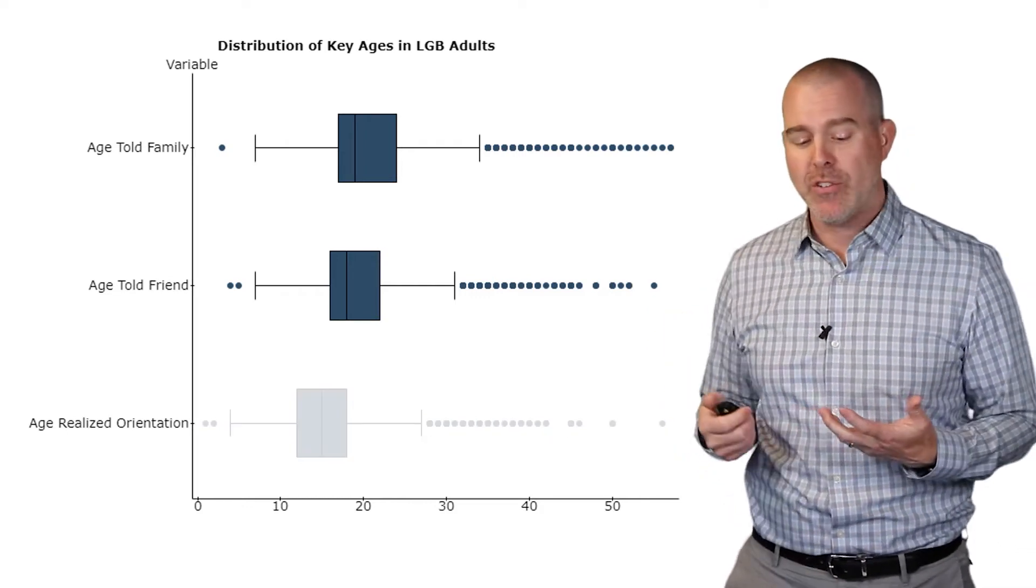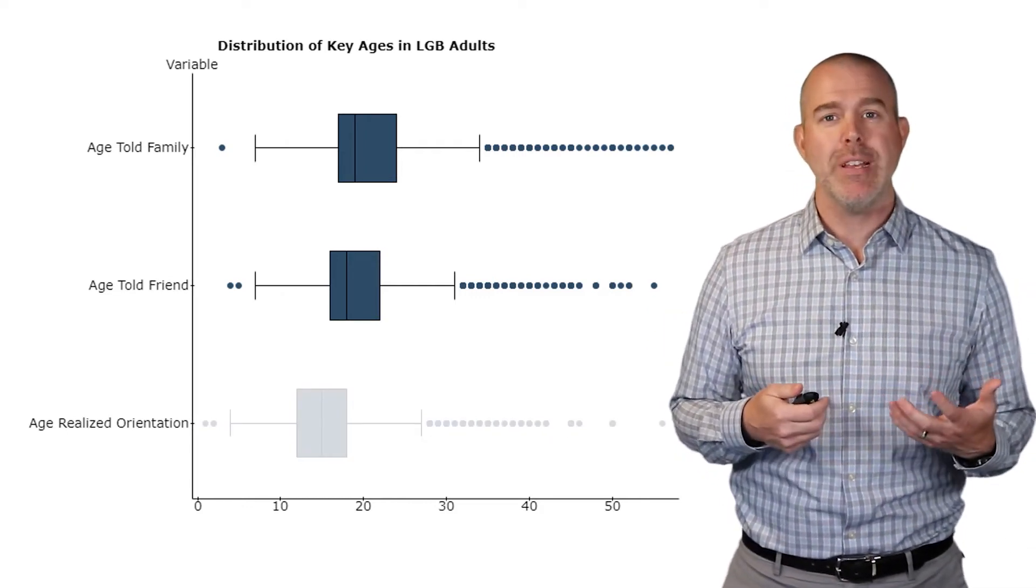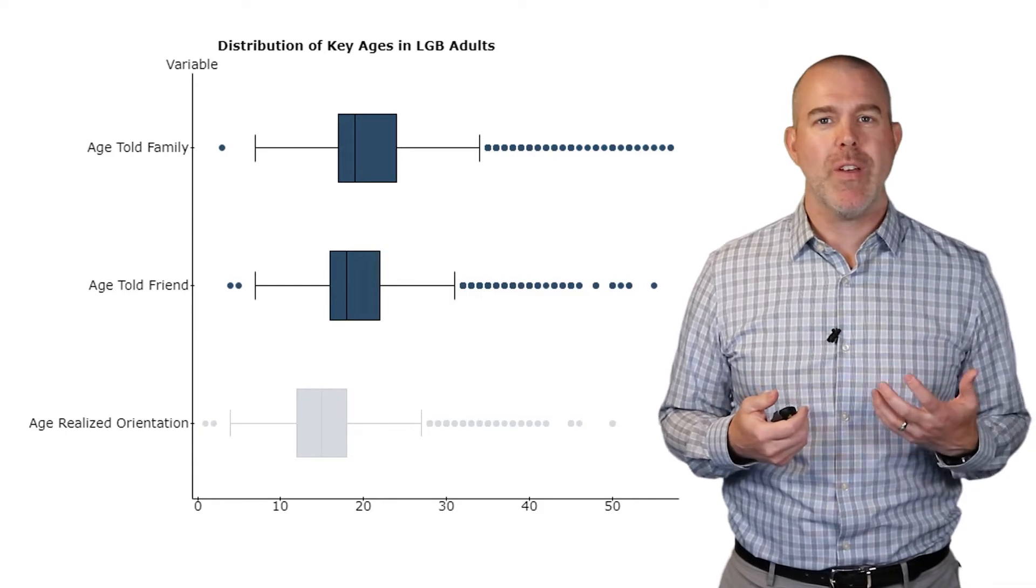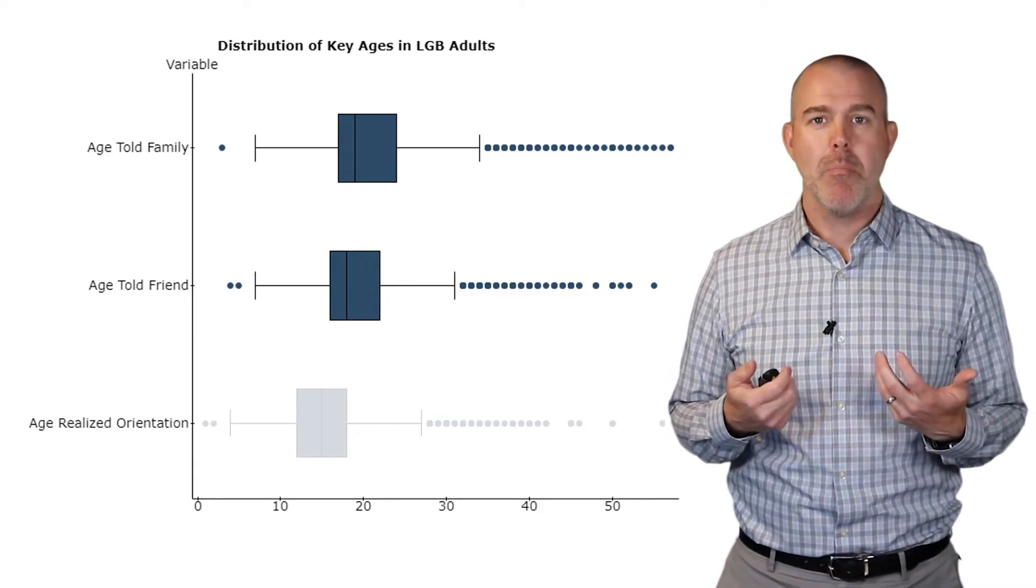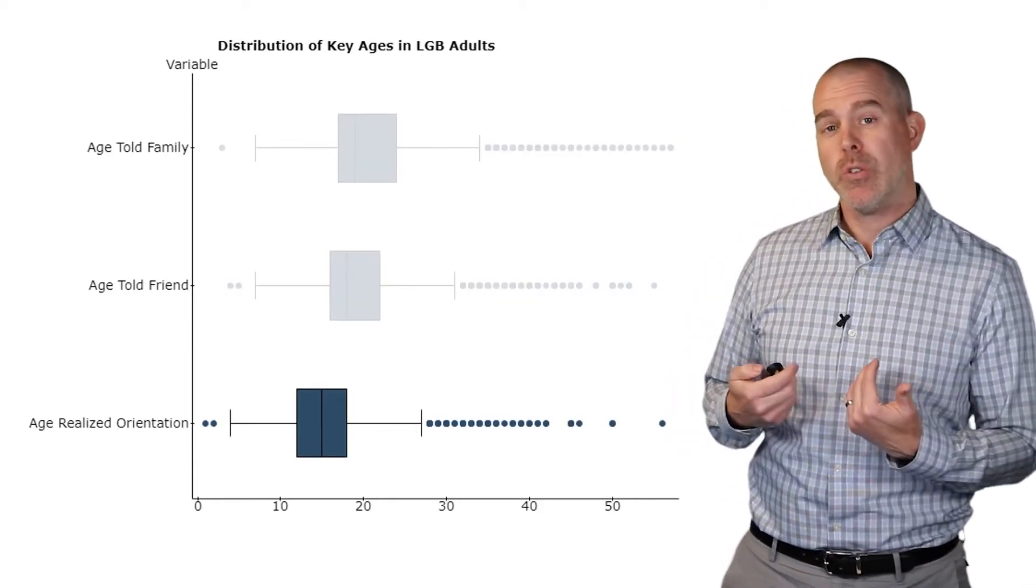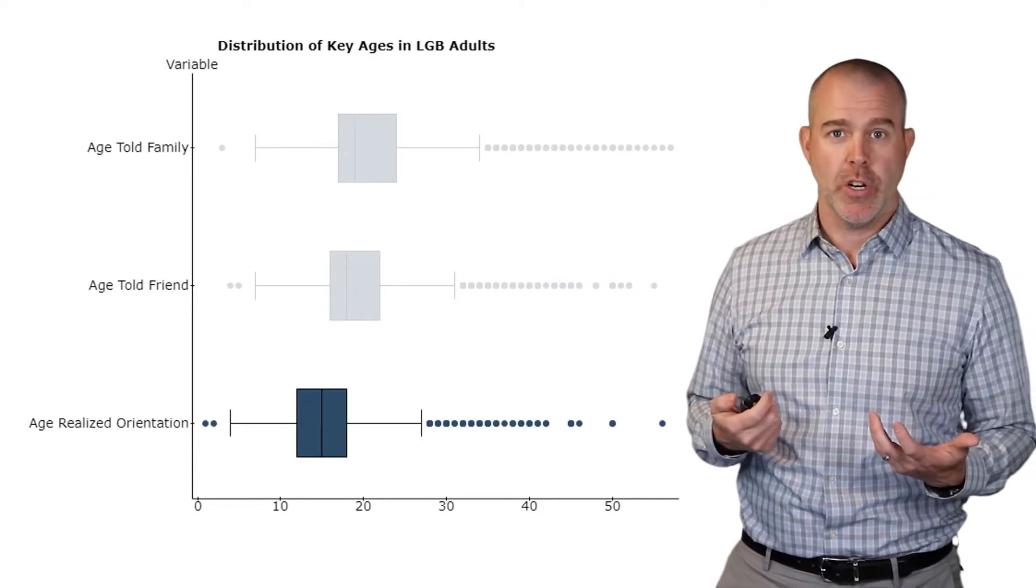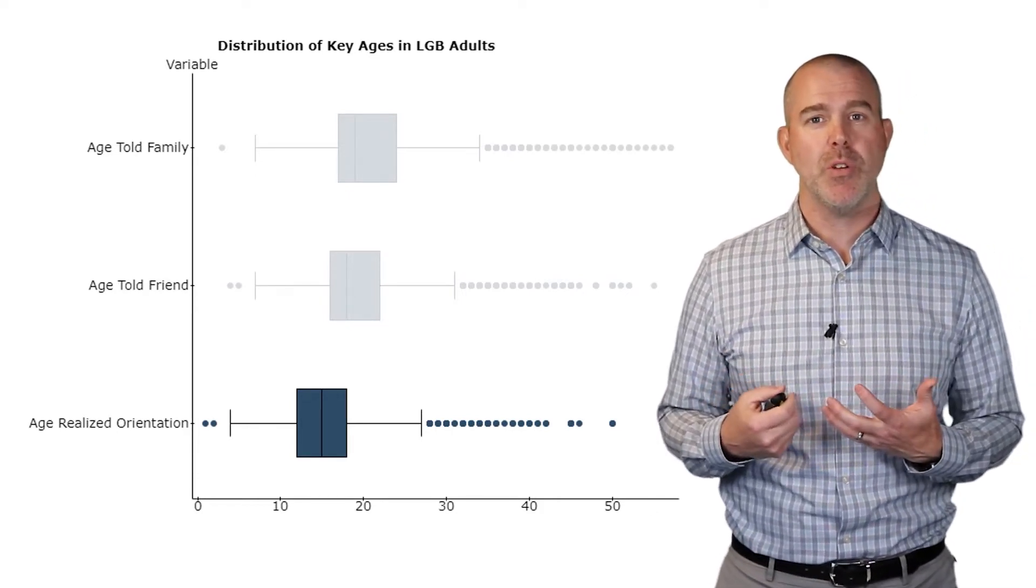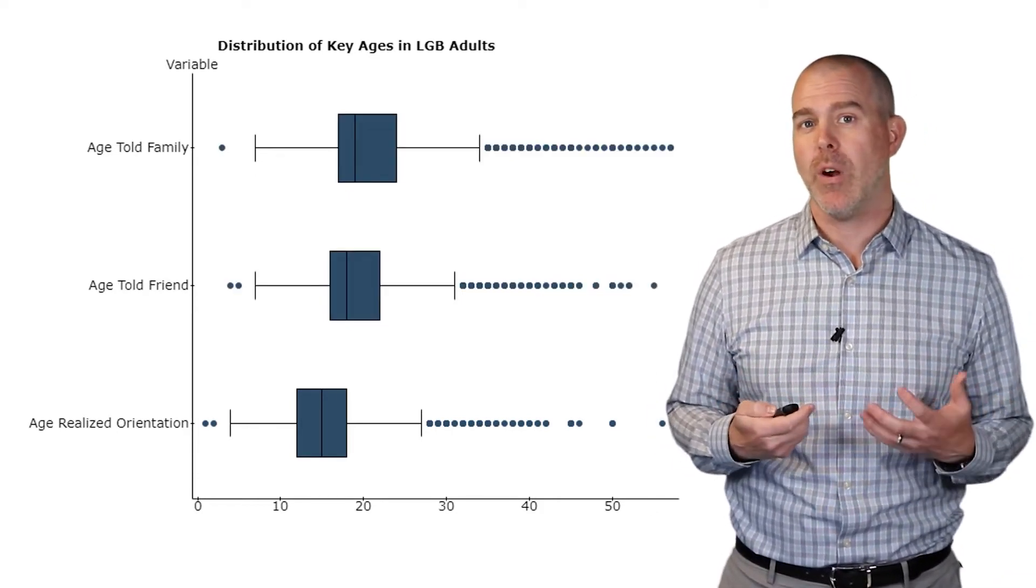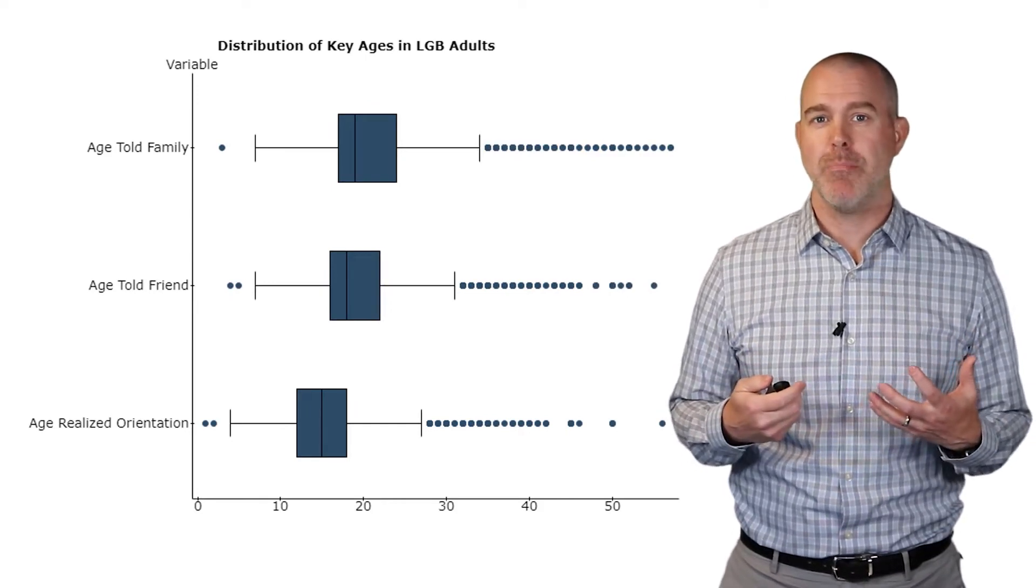For example, you can see the age told family and age told friend are pretty similar. The age told family tends to be a little bit later, but pretty similar. Whereas, of course, the age realized is much earlier. And you can see that on the distribution. And that's what this box plot does for us. It lets us see a relationship between these.